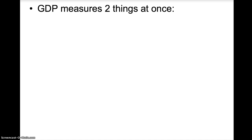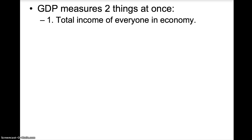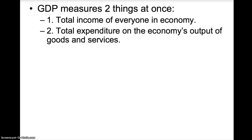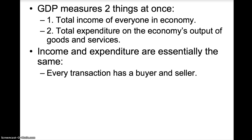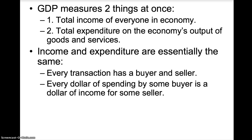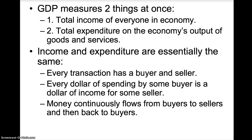GDP measures two things at once: the total income of everyone in the economy and total expenditure on the economy's output of goods and services. GDP can measure two things at once because income and expenditures are essentially the same. Every transaction has a buyer and a seller, and every dollar of spending by some buyer is a dollar of income for some seller. The money continuously flows from buyers to sellers then back to buyers, just like in the circular flow diagram. GDP is just measuring the flow of money — in one direction it is total income, and in the other direction it is total expenditure.